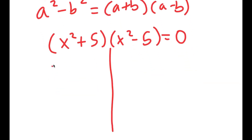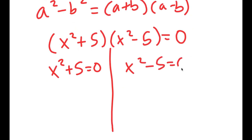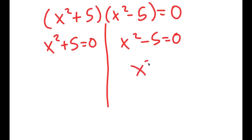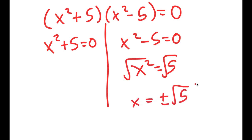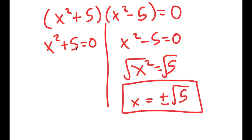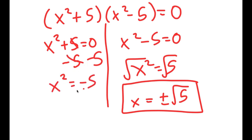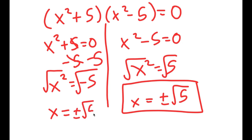This gives two equations: x squared plus 5 equals 0, and x squared minus 5 equals 0. For x squared minus 5 equals 0, x squared equals 5, so taking the square root gives x equals positive or negative square root of 5. For x squared plus 5 equals 0, subtracting 5 gives x squared equals negative 5, so x equals positive or negative square root of 5 times i. These are the four solutions to this equation.